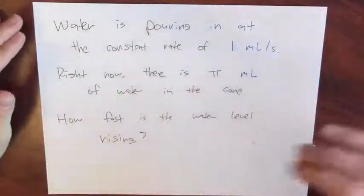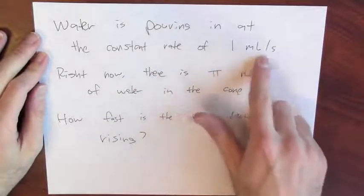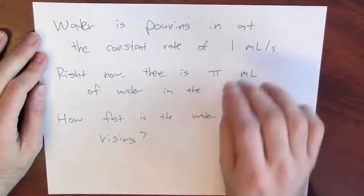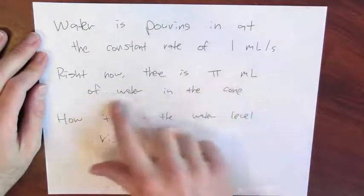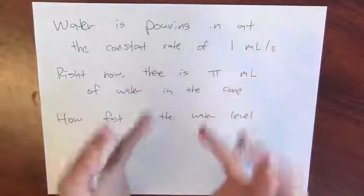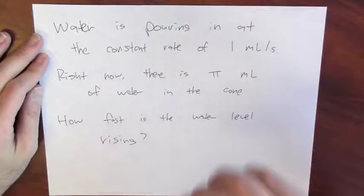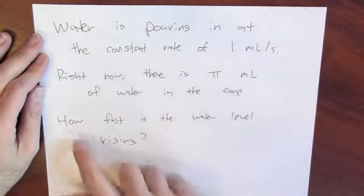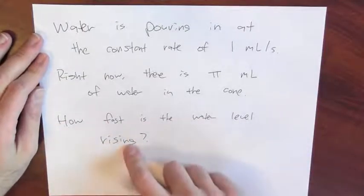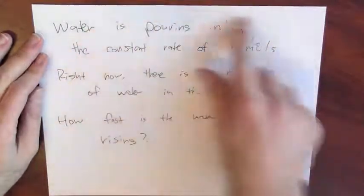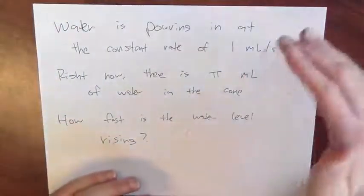Water is pouring into that cone at the constant rate of one milliliter per second. Remember that a milliliter of water is one cubic centimeter. Right now, there's pi milliliters of water in the cone. More water is pouring in. The question is, how fast is the water level rising? That's the related rates question. I know how fast the water's coming in, I know the change in volume, I want to know how quickly the water height is changing.